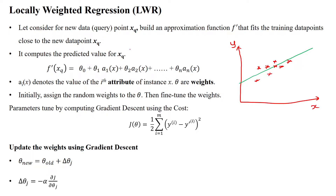Here we assume a number of data points already available in the given plot — these are all training samples. Then we assume a new data point coming into the model, denoted as xq, the query data point. We have to build an approximation function f-dash that fits the training data points close to the new query data point xq.